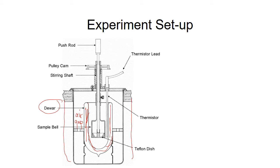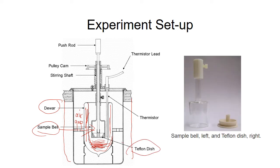If the reaction involves a solid and a liquid sample, the liquid sample is placed inside the dual flask and the solid is placed inside a bell-shaped sample cell. The bottom of the cell is a Teflon dish. The solid is placed inside this Teflon dish, the sample bell is then carefully pressed over this dish, and the cell is then placed inside the calorimeter.